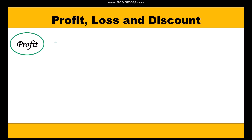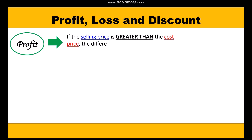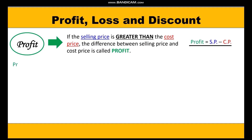If the selling price is greater than the cost price, the difference between the selling price and cost price is called profit. So profit = selling price − cost price. To calculate profit percent, we use the formula: profit percent = (profit / cost price) × 100.